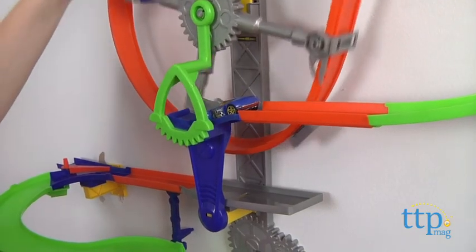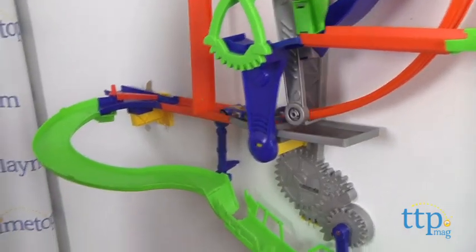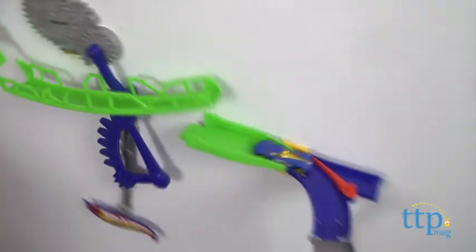Then you can send the included Hot Wheels car through the spinning loop, around the curve, and across the rocking bridge.